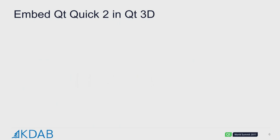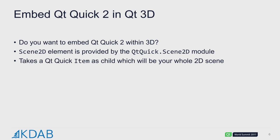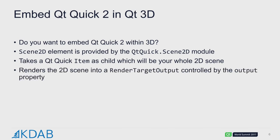If you want to embed QtQuick inside Qt3D, you can also do that. The way we do that is using a component called Scene2D, provided by the module QtQuick.Scene2D. It takes a QtQuick item as a child representing your 2D content you want to put in your 3D world. Behind the scenes, this gets rendered into a framebuffer object, which in Qt3D is represented by RenderTargetOutput.